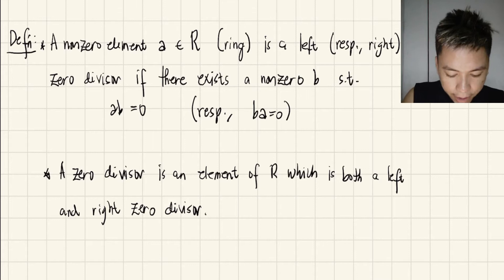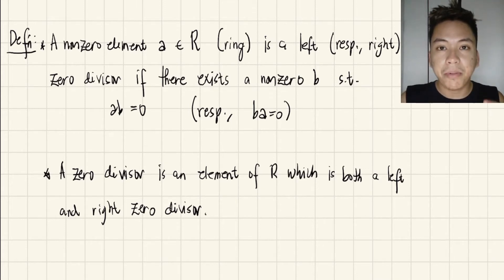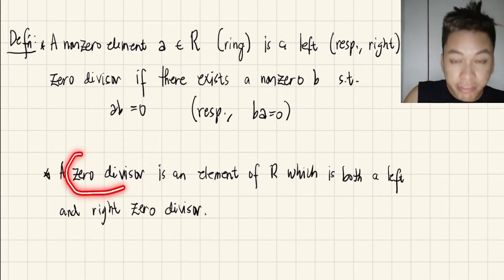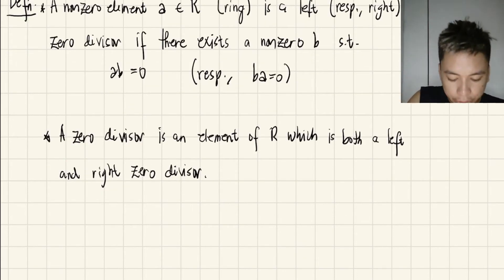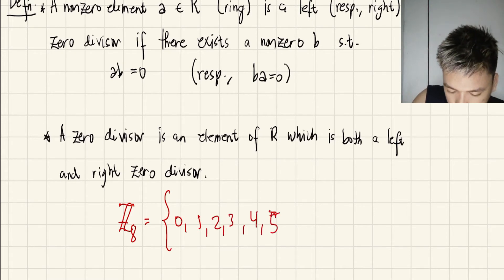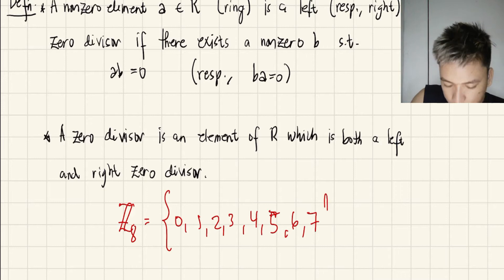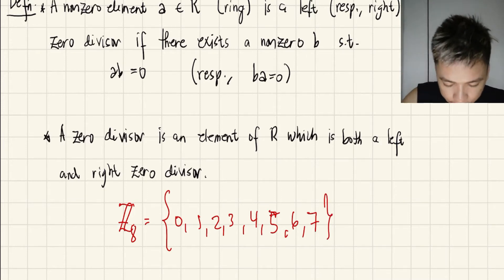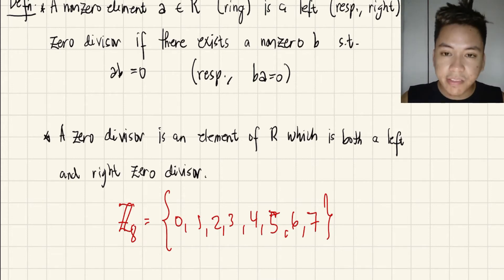In the event that an element, say for example A, is both left and right zero divisor, then we will just call that element a zero divisor. So let's consider an example here. Suppose we have Z8. So the elements of Z8 are 0, 1, 2, 3, 4, 5, 6, 7. These are integers modulo 8. That means you have eight elements inside of the set.